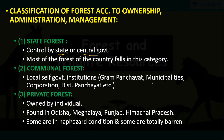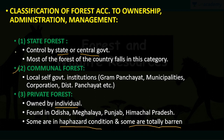The third type under ownership is private forest, owned by some individual or local person. This kind of forest is found in Odisha, Meghalaya, Punjab, and Himachal Pradesh. Private forests are mostly controlled by individuals and are in a half-hazard condition or sometimes totally barren. They do not have as much vegetation as communal or state forests.